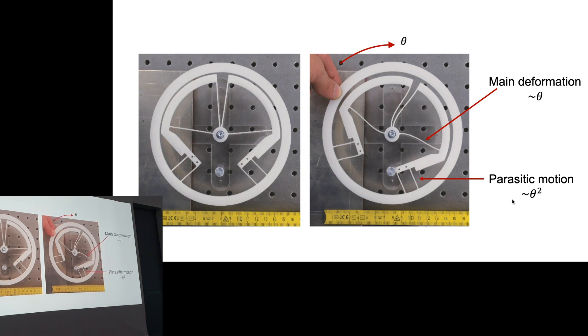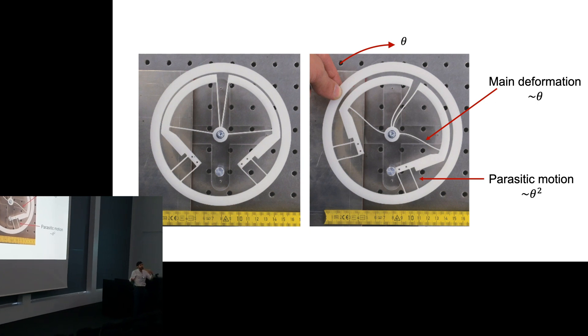This is of the same order as the isochronism defect. So by changing the stiffness of these blades, I can change the stiffness variation of my pivot without changing the main stiffness. So I can change the isochronism defect. I can tune it.